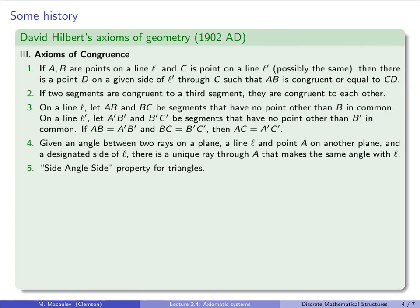The third group of axioms are those of congruence. This is a concept that describes what it means for two segments to be equivalent or the same, and also two angles. I use the same term. So if A and B are points on a line L and C is a point on another line, it could be the same, then there is a point D on a given side of L' through C, such that AB is congruent or equal to CD.